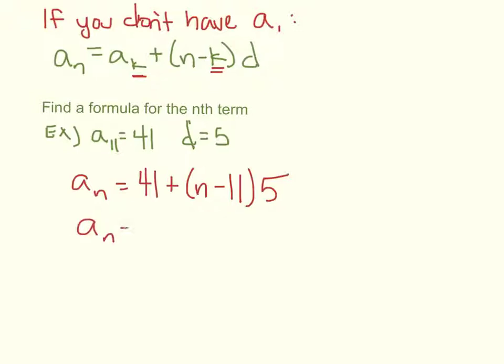So again, the 11, if we're thinking about like a point slope formula, the 11 is an x, 41 is a y. All right, so aₙ equals 41 plus 5n minus 55. So aₙ equals 5n, 41 minus 55, negative 14.